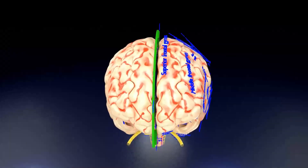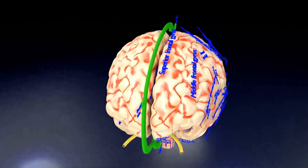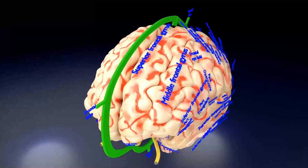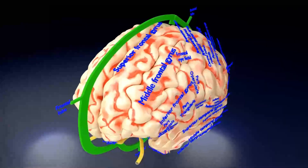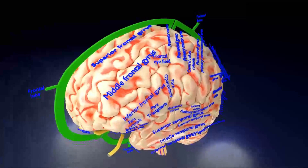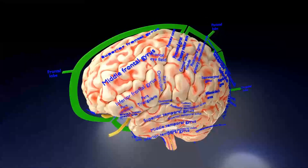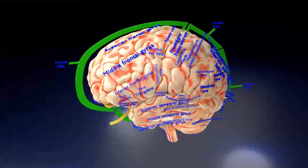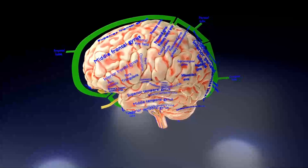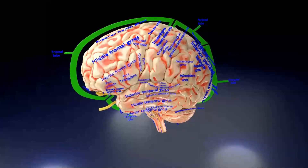In the previous part, that is part one of this video series regarding the brain, I gave a brief introduction of the broad anatomical classification of the brain. In this second part of the series, I will explain the superficial visible structures of a human brain, excluding the base of the brain and the cerebellum, which are covered in the third and fifth parts of this video series respectively.